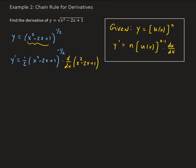That is applying the general power rule. Now we take the derivative of x squared minus 2x plus 1, so we have 1/2 times (x squared minus 2x plus 1) to the power of negative 1/2, and then the derivative of the inside is 2x minus 2.